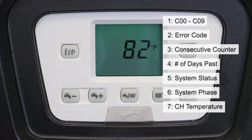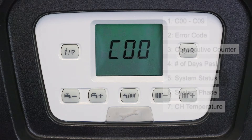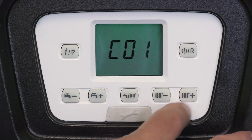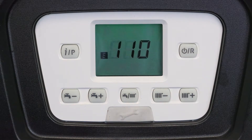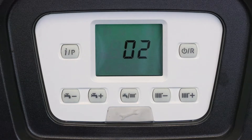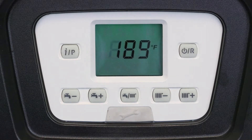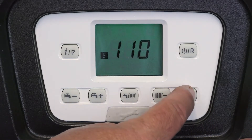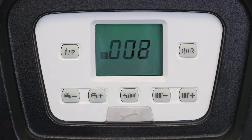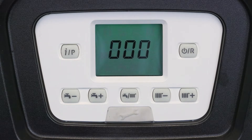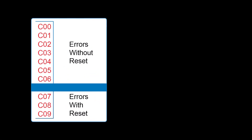You can then press the radiator plus button to advance to the next error code, C01, and it will show the seven different numbers for that error. This boiler can store up to ten errors. Continue pressing the radiator plus button to access errors all the way to C09.